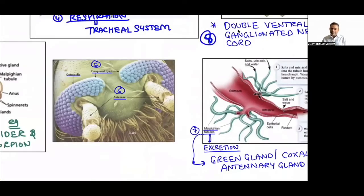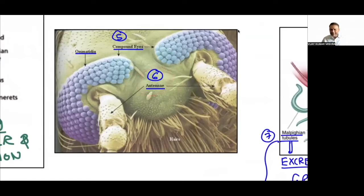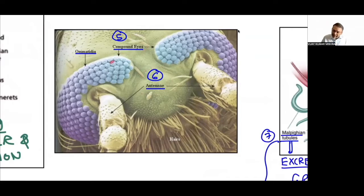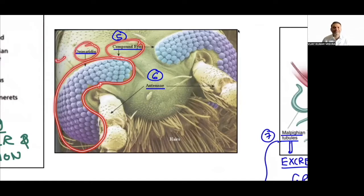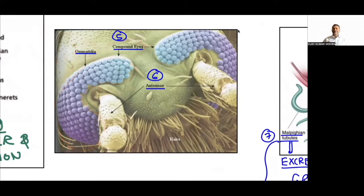Arthropoda sense organs: antennae are present and compound eyes are present. The compound eye is made up of hexagonal units called ommatidia (singular: ommatidium). Simple eyes are present in some organisms. The compound eye made of ommatidia is a very important point for competitive exams.